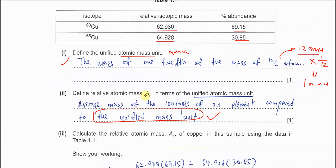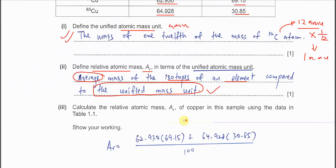When you define the Ar because this one unified mass unit means the part one. And please remember when you define relative atomic mass, you must put average mass of all the isotopes of an element.